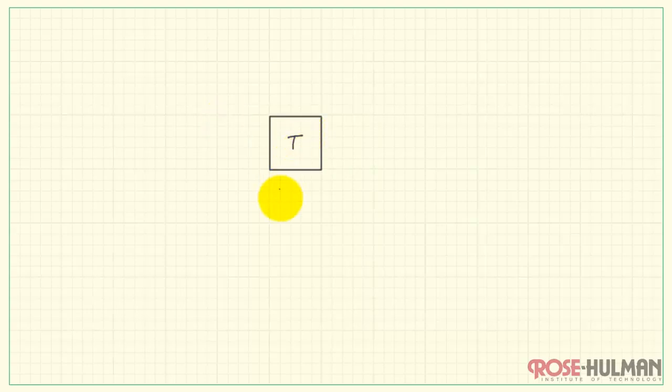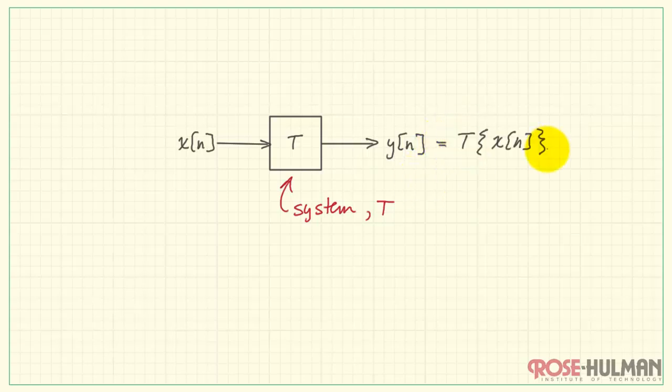Let's begin with the system T. The system has an input sequence X of n and an output sequence Y of n. The system operates on the input X to produce the output Y.